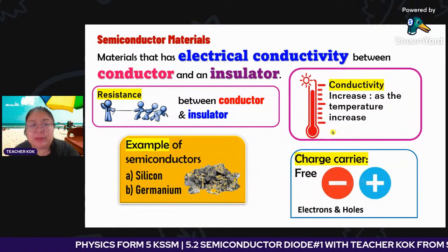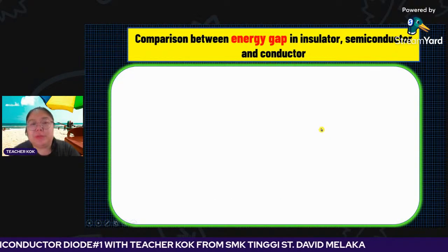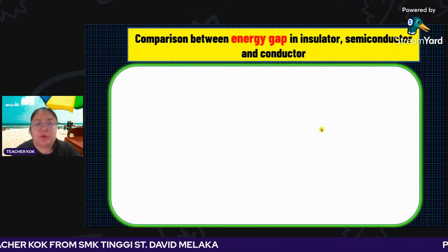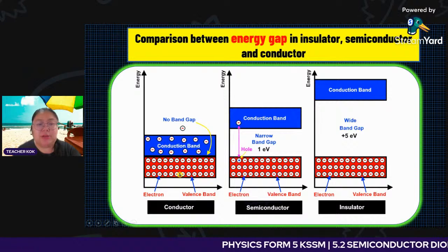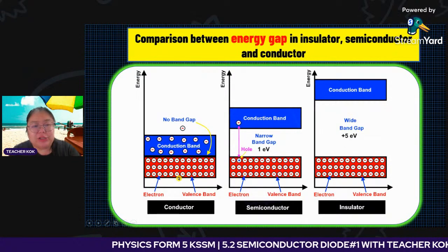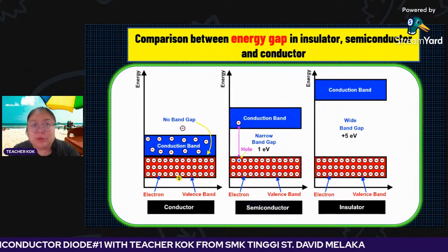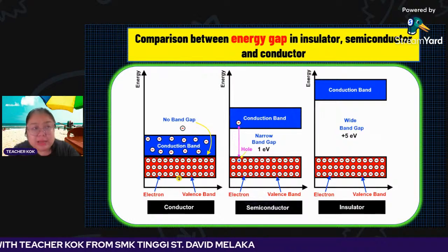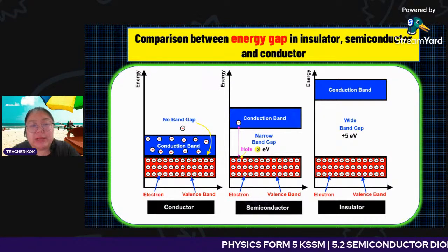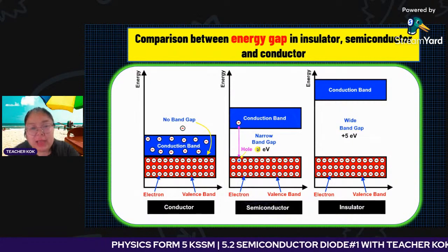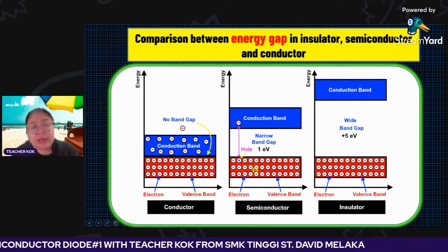We do a comparison of the energy gap for the insulator, semiconductor, and conductor. In the conductor, electrons go to the conduction band easily because they stick together — no band, so the electron is easy to move and conducts electricity. In the semiconductor, there is a gap in the middle. The electron needs to jump over the gap to go to the conduction band, then it can conduct electricity. So how to make the electron jump? We must increase the temperature.